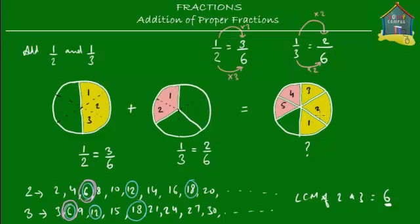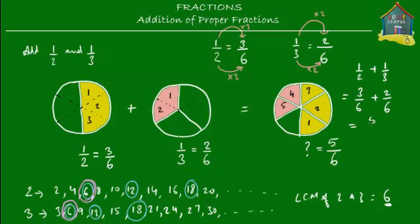Together Annie and Betty have one, two, three, four, and five slices out of six slices. So the answer is five upon six. That means one upon two plus one upon three, converted to like fractions, gives three upon six plus two upon six, which equals five upon six.